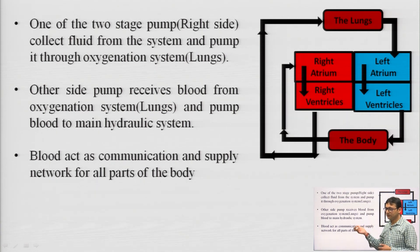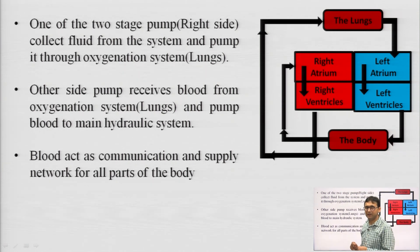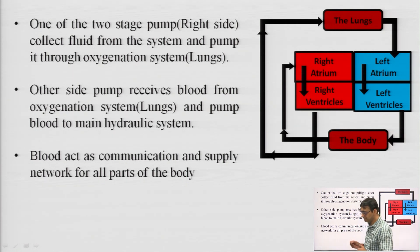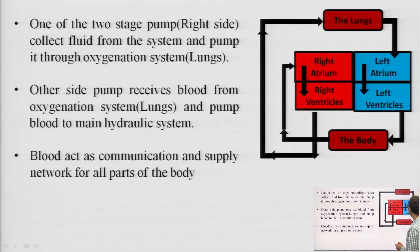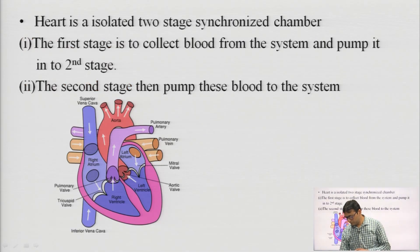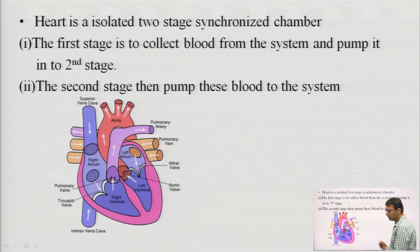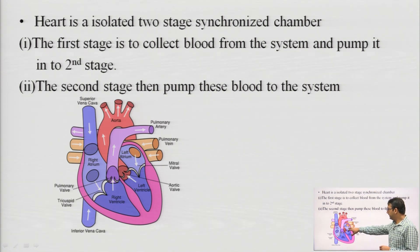The heart has four valves. The first is the tricuspid valve, located between the right atrium and right ventricle; its purpose is to prevent blood flow from the right ventricle back to the right atrium. The next is the mitral valve, a bicuspid valve present between the left atrium and left ventricle; its task is to prevent blood flow from the left ventricle back to the atrium. We also have the pulmonary valve, present at the right ventricle, and the aortic valve, present between the left ventricle and the aorta.